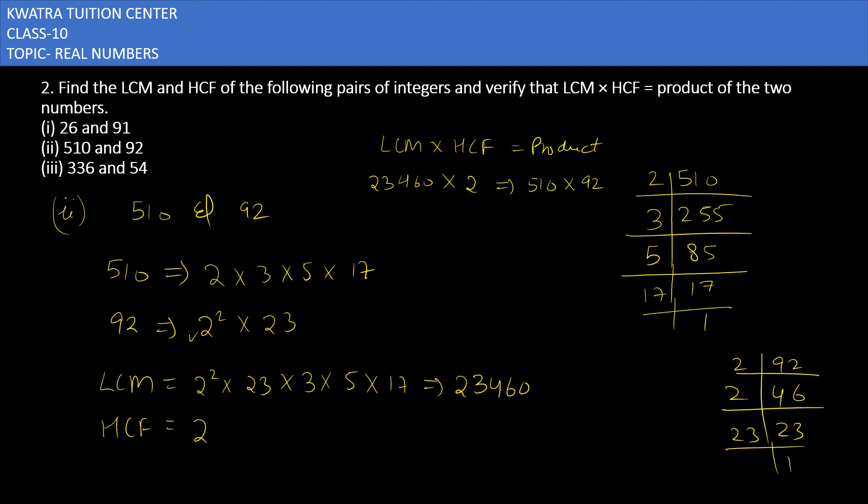LCM is 23,460, HCF is 2, so 510 × 92. On the left side, if you multiply, you will get 46,920, and on the other side you will get 46,920. So yes, this is verified.